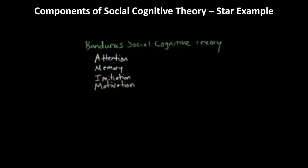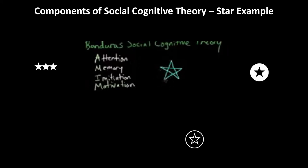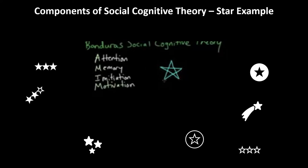So this is Bandura's Social Cognitive Theory and its four components: attention, memory, imitation, and motivation. Let's say I want to teach you how to draw a star. In order to learn how to draw a star like I did, you have to have an attention span long enough to watch me go through the movements of drawing the star. You also have to have a memory to remember me drawing the star. Imitation means you have to be able to imitate what I just did — if I were to ask you to draw it, that would involve your memory and attention span.